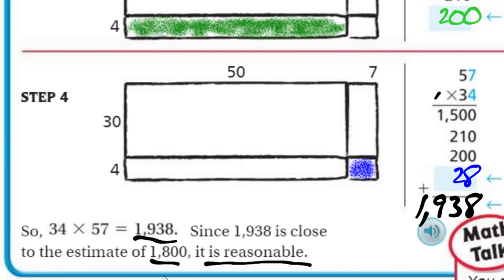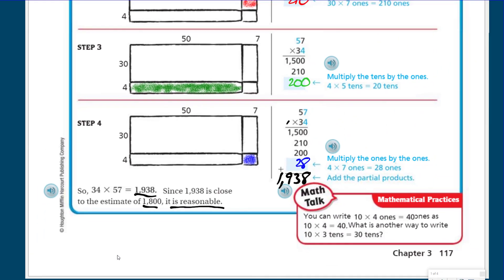They took this into another area — we got to see the recording of the partial products alongside the model on the left. So we're gradually moving our way towards just doing the standard algorithm, but right now we're learning how those partial products explain what we're doing. It helps us understand the math.